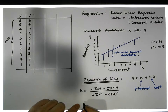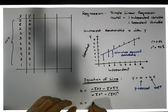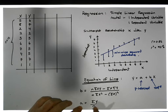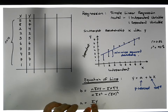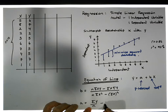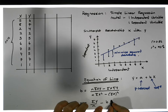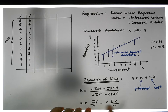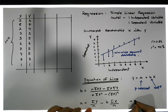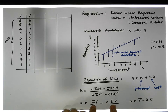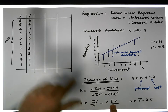The intercept a is equal to y-bar — the sample mean for y — minus the b value times the sum of the x's divided by n. There's an alternative form: a equals y-bar minus b times x-bar. But I prefer to leave it in summation notation because it's easier to calculate.